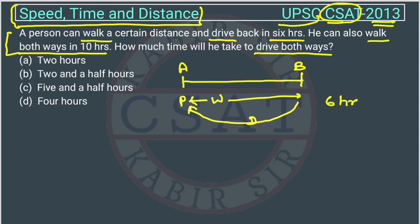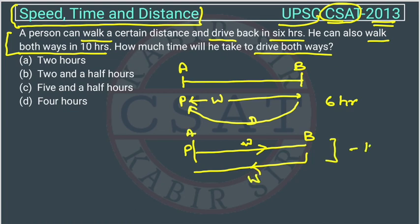6 hours. And in the second case, this person is walking from here till here, going this way and then from here to here again he is walking. This is B point, this is A point. So this is also walking. He is taking how much time? 10 hours.